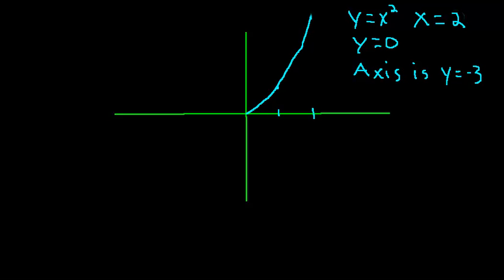In this video we're going to be looking at a volume of revolution using the washer method. So what we have here is we have three equations: y equals x squared, x equals 2, and y equals 0.